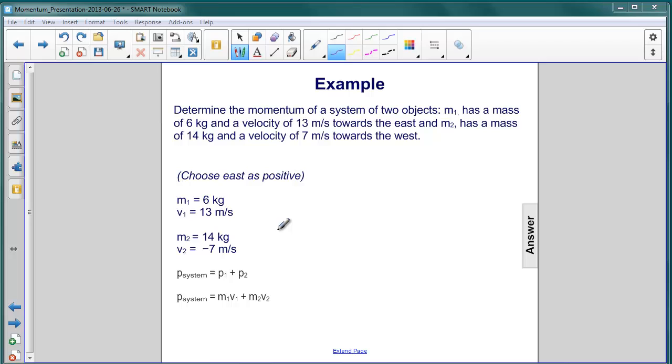Here's an example. Determine the momentum of a system of two objects, one with a mass of 6 kilograms and a velocity of 13 meters per second towards the east, and a second one with a mass of 14 kilograms and a velocity of 7 meters per second to the west.